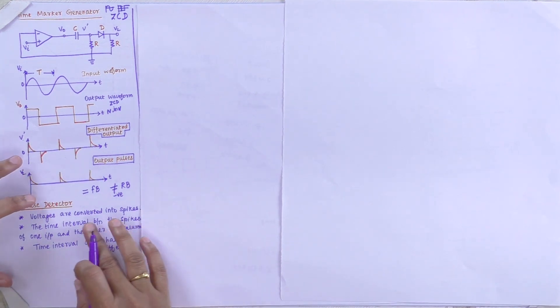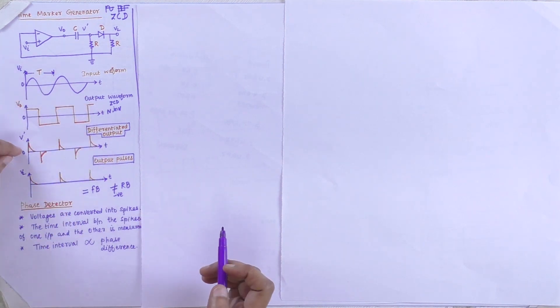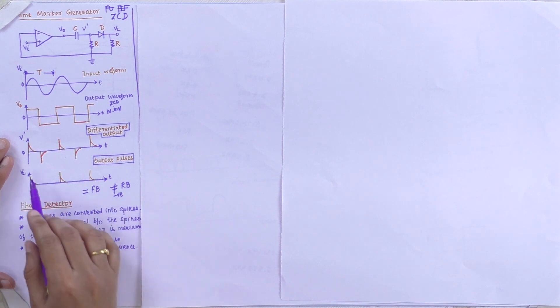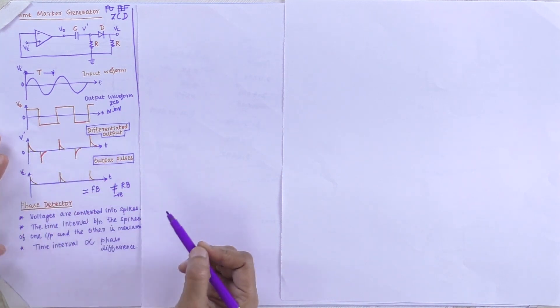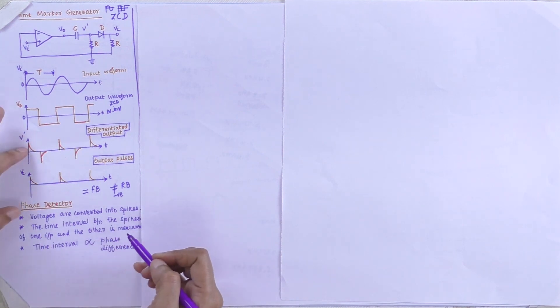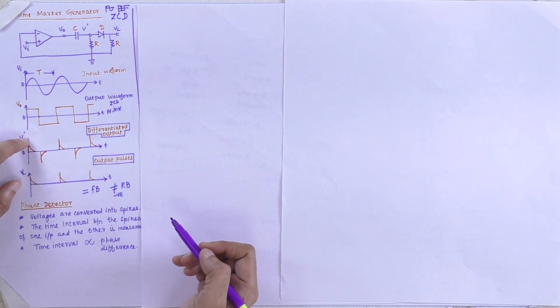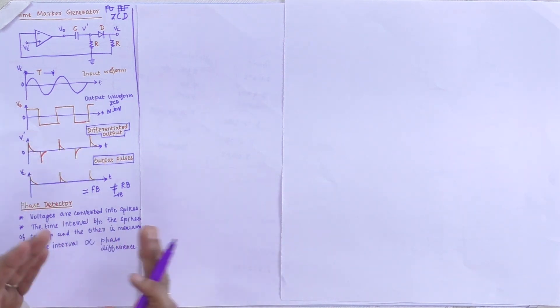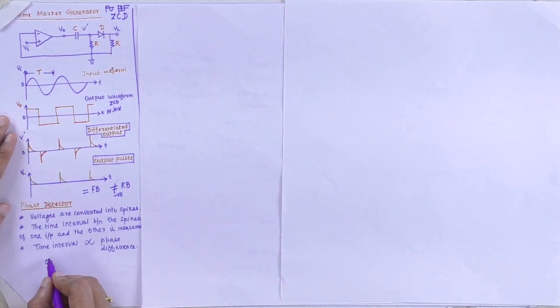In the phase detector, the voltages are converted into spikes — as in the differentiated output. The time interval between the spikes of one input and the other is measured. Where the maximum peak of one occurs and the maximum peak of the other occurs, the time difference is found. This time interval is proportional to the phase difference, and the circuit can measure the phase angle from 0 degrees to 360 degrees.